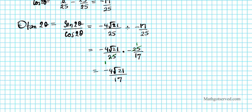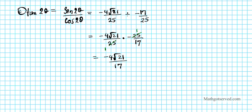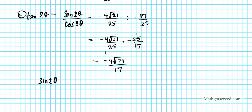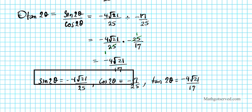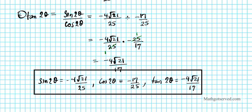Let's organize our answers: sin 2θ equals negative 4 root 21 over 25, cosine 2θ equals negative 17 over 25, and tan 2θ equals negative 4 root 21 over 17. Those are all the answers for sine 2θ, cosine 2θ, and tan 2θ.